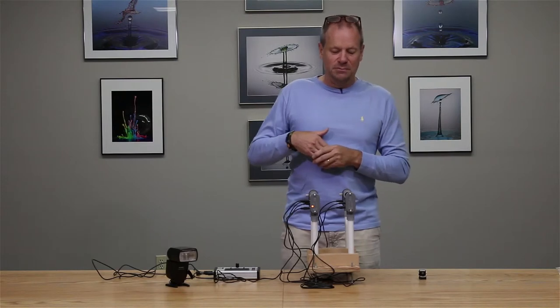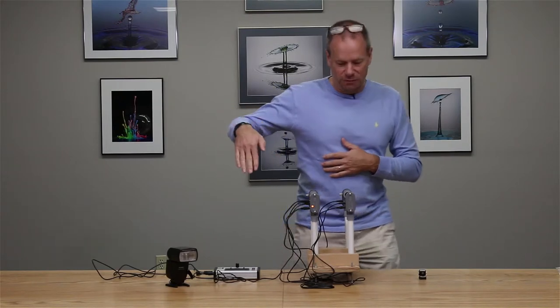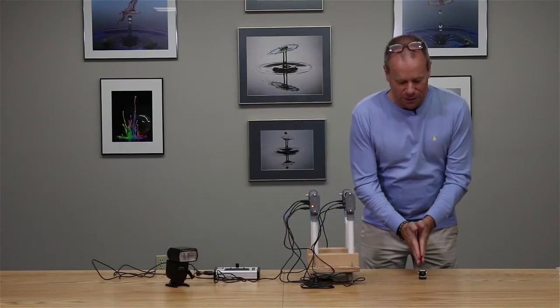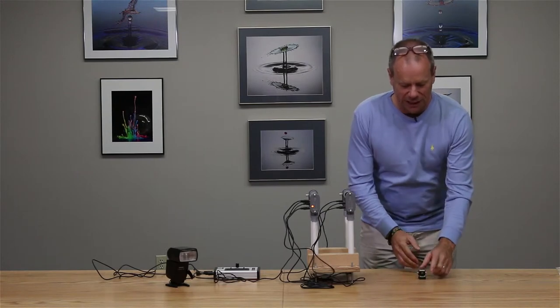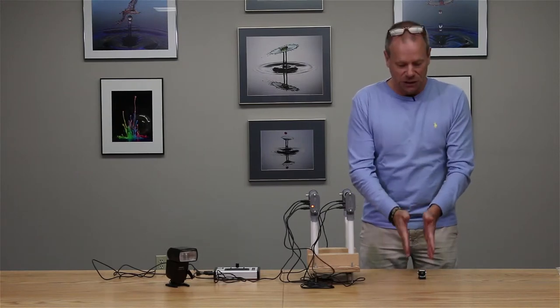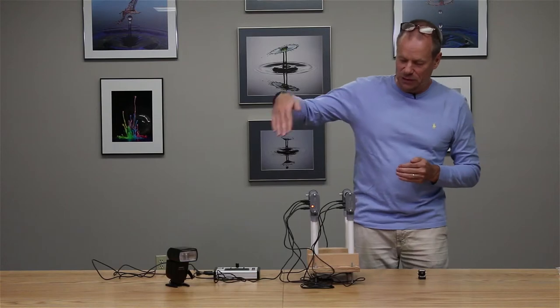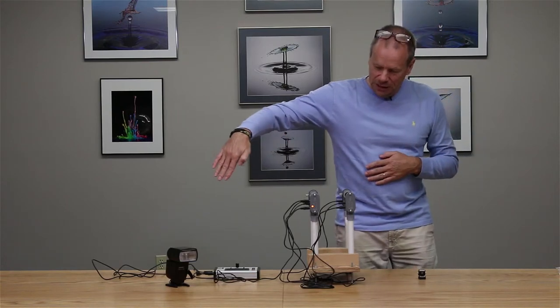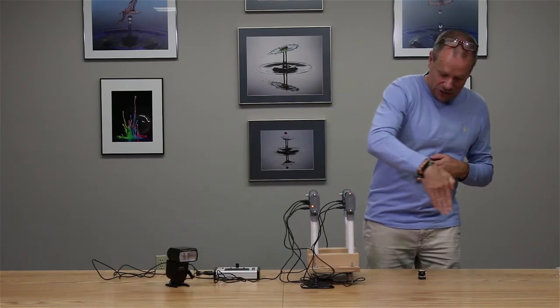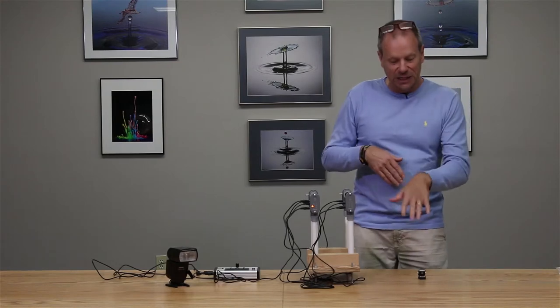So let me show you by moving my hands through it, and we have this hot shoe flash here as a rough calculation of where we want the impact to occur, where we want the flash to fire. So if we go through here at constant velocity, you'll see that the flash fires when my hand is right about here.